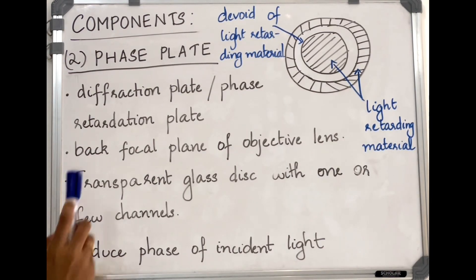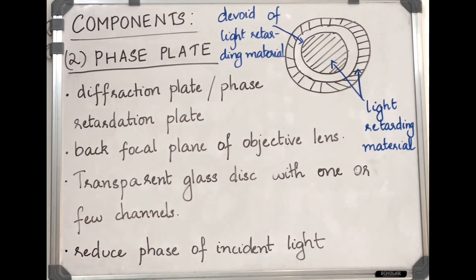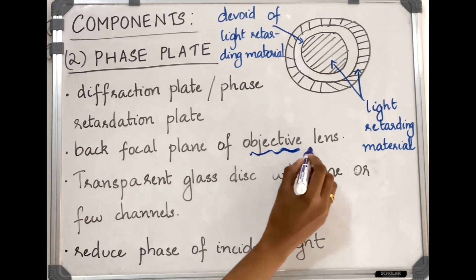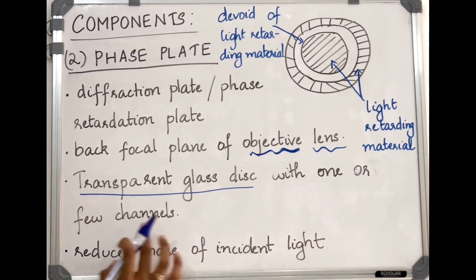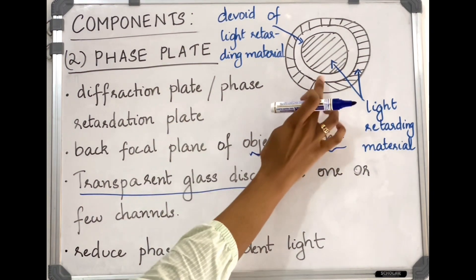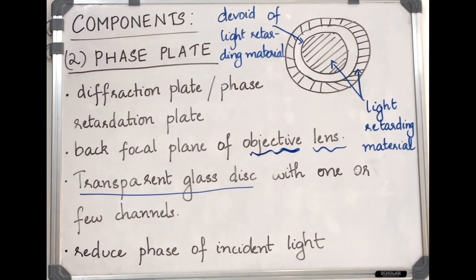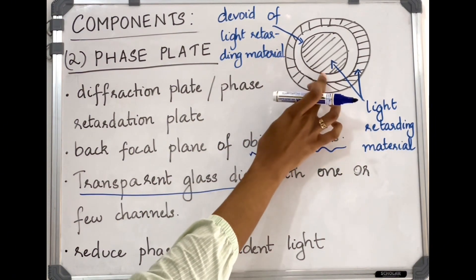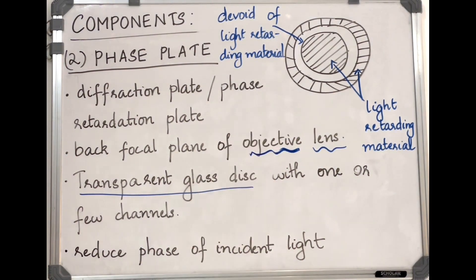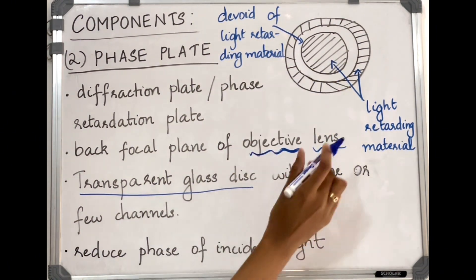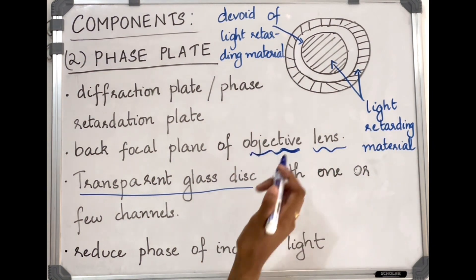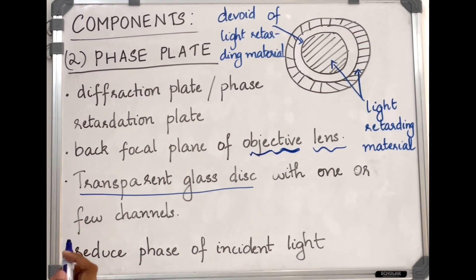The phase plate, also called the diffraction plate or phase retardation plate, is located at the back focal plane of the objective lens. It is a transparent glass disc with one or a few channels. The middle channel is devoid of light-retarding material and instead absorbs light, while the other portions are coated with light-retarding material such as magnesium fluoride. The phase plate helps to reduce the phase of incident light.